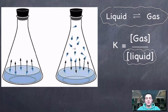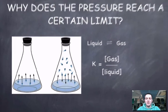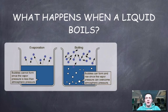If K can't change unless the temperature changes, then the pressure of the gas above the liquid can't change unless the temperature changes. It doesn't matter how big your flask is or how much liquid you put in — the equilibrium vapor pressure above the liquid will always be the same at a given temperature.